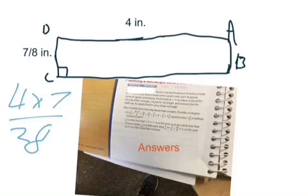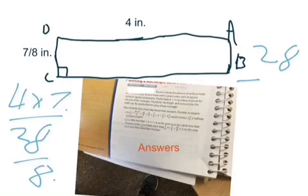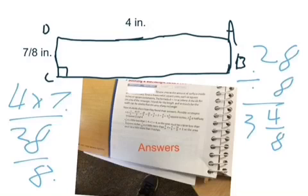Then you would do the 8th, because you bring the 8th from up here down to here. And what's 28 eighths divided by 8? It is 3 and 4 eighths, or 3 and 1 half.